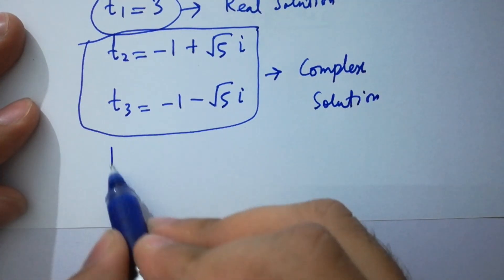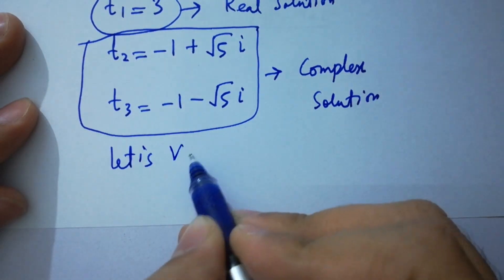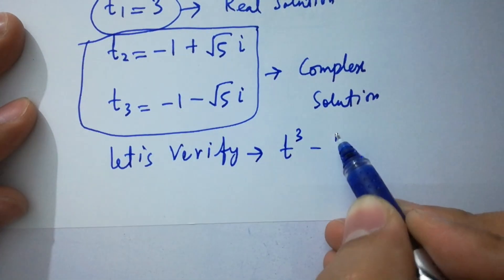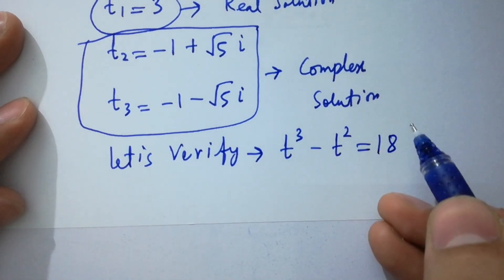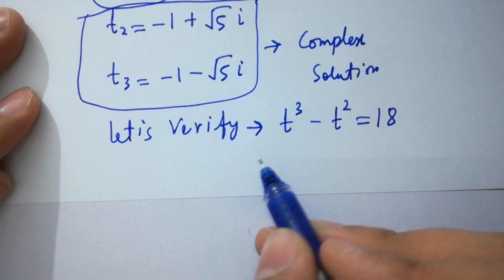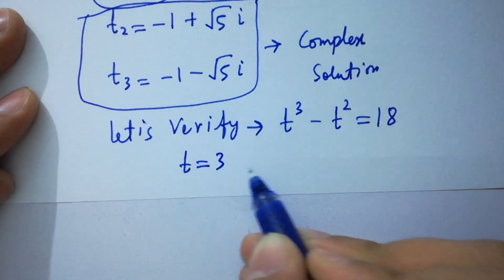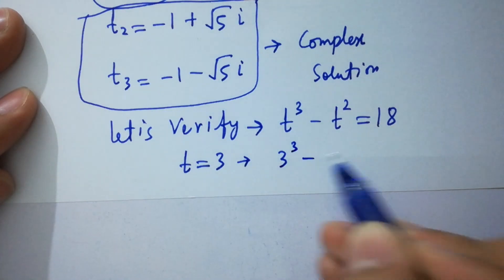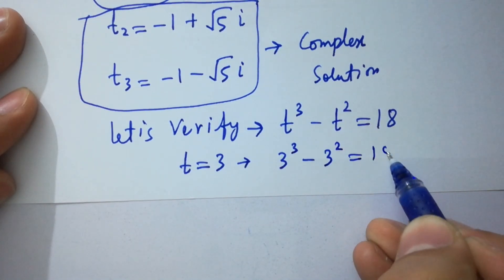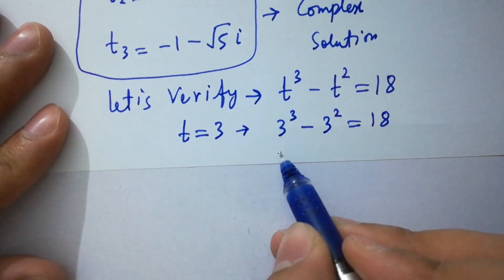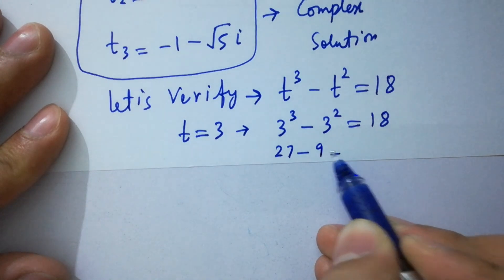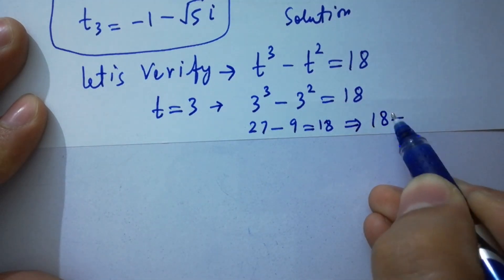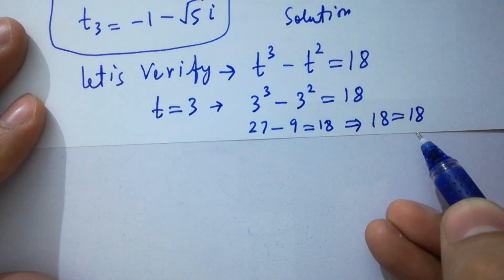Now let's verify. We check t cubed minus t squared equals 18 by putting t equals 3: 3 cubed minus 3 squared equals 27 minus 9 equals 18. Left-hand side equals right-hand side. Verified.